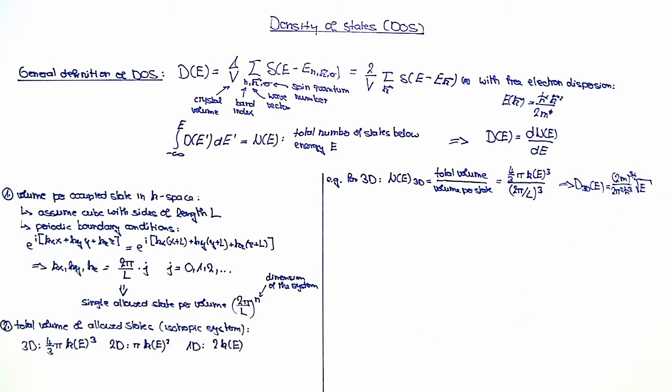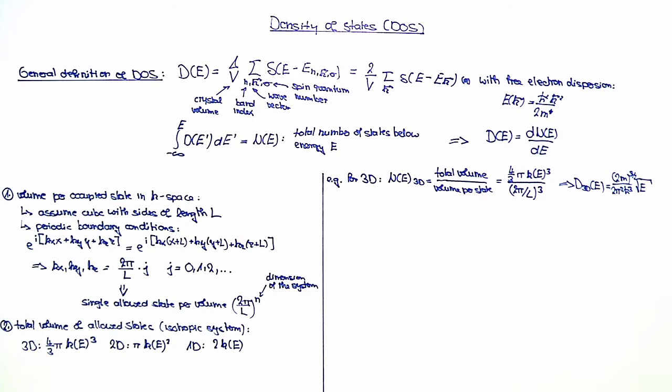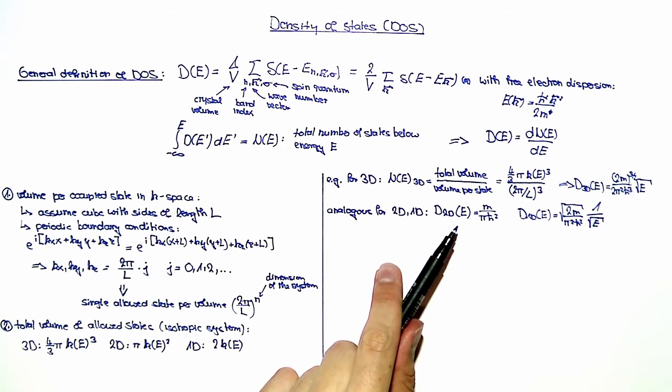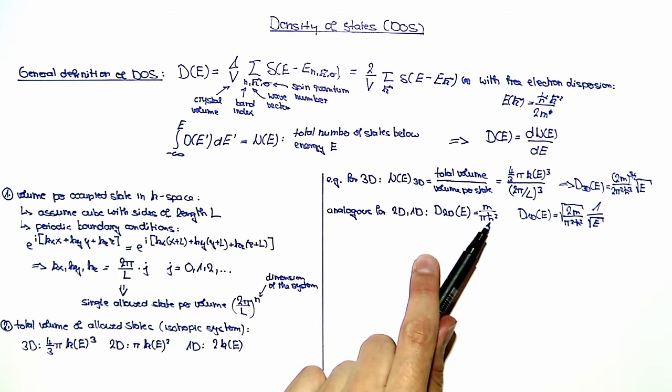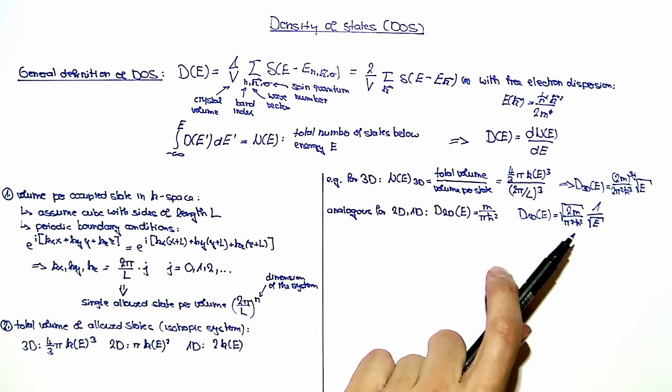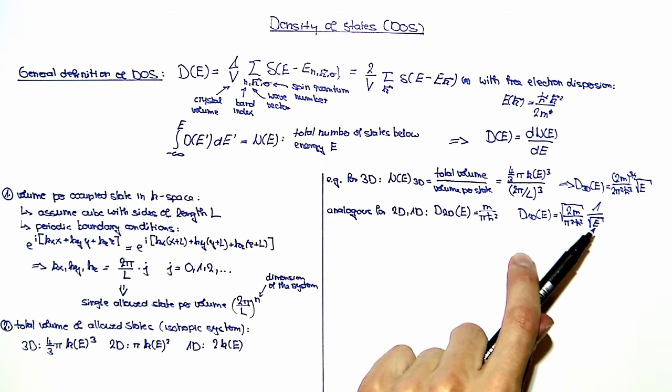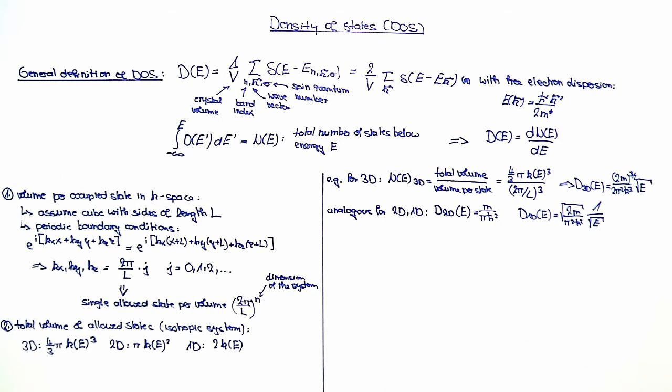We can do it now in an analogous way for 1D and 2D by using these equations and plugging in the free electron dispersion and differentiating according to the equation for the density of states. By doing this, we obtain for the 2D case a density of states which is independent of energy. For the 1D case, density of states is proportional to 1 over the square root of the energy. You can see for 3D, 2D, and 1D systems, we have different dependencies on the energy.